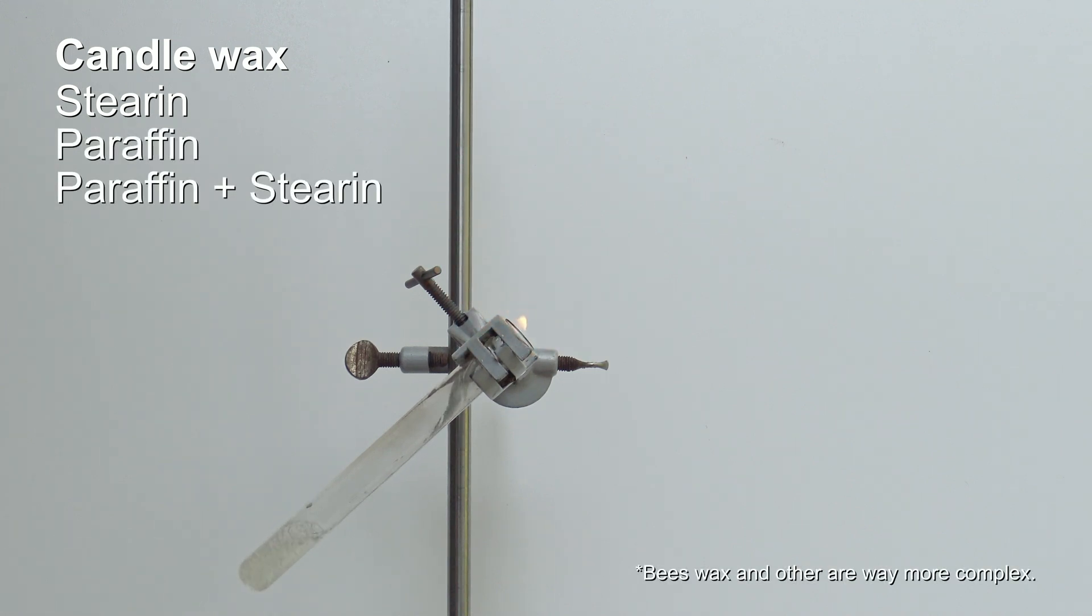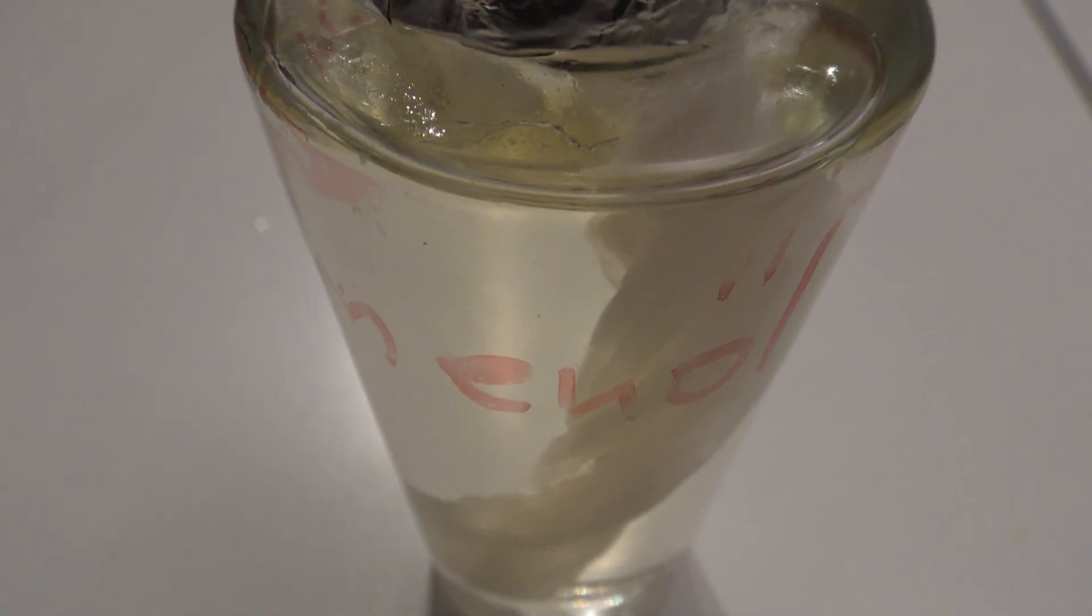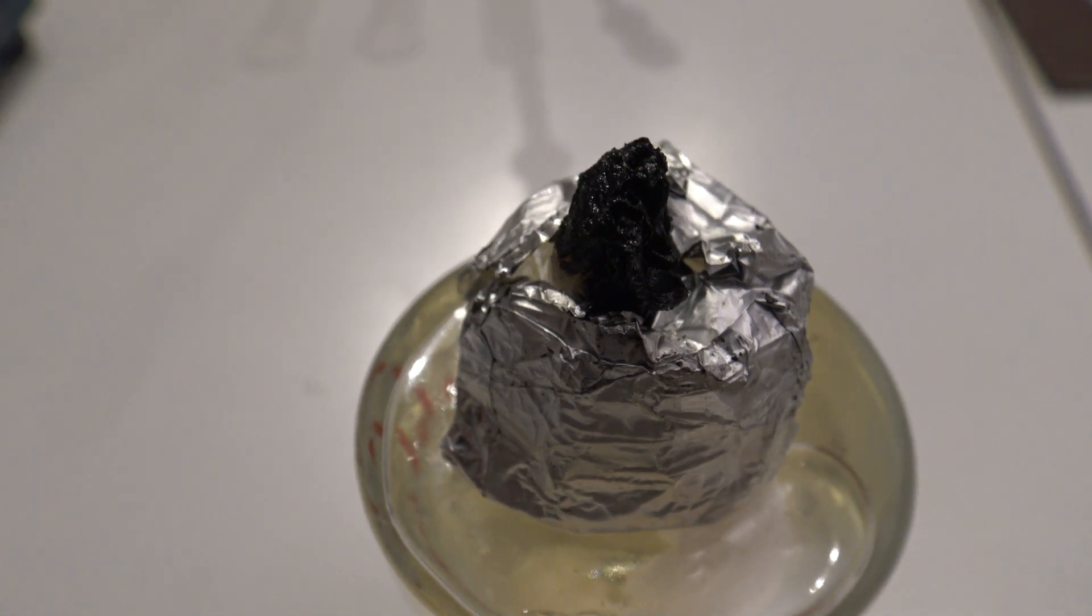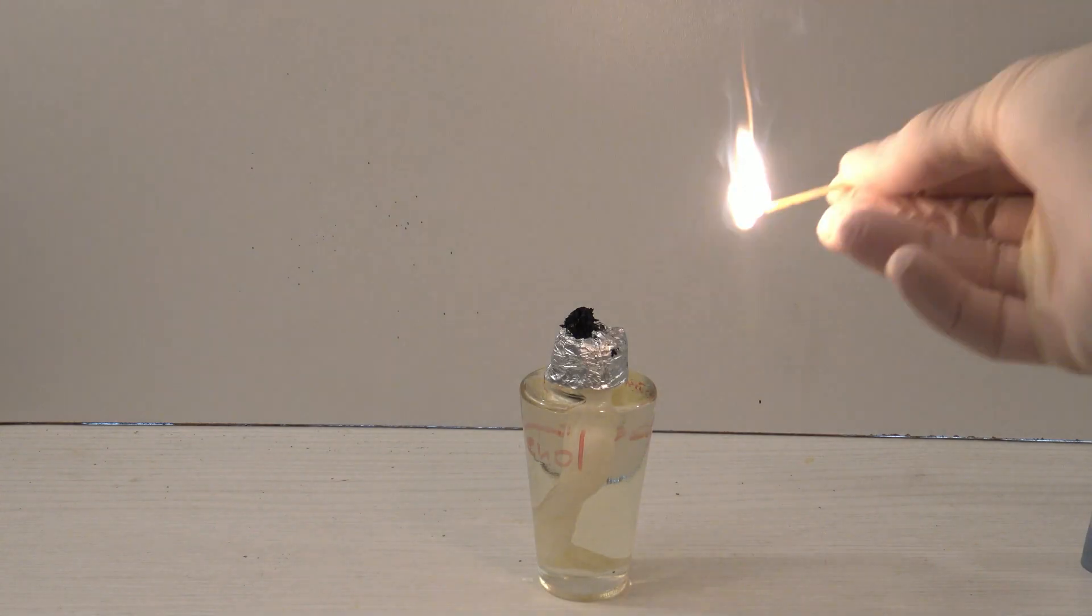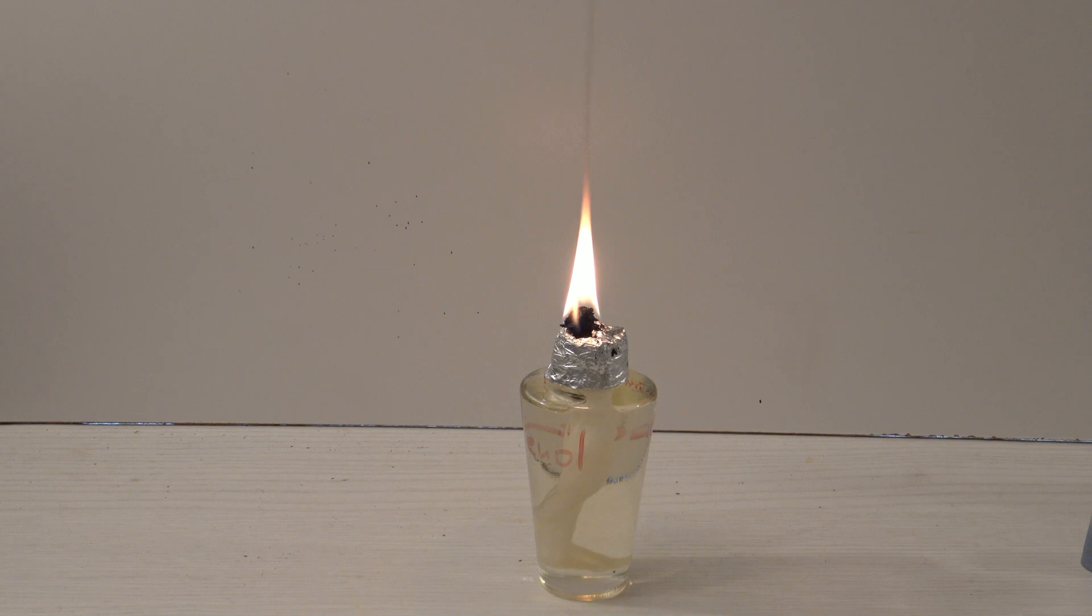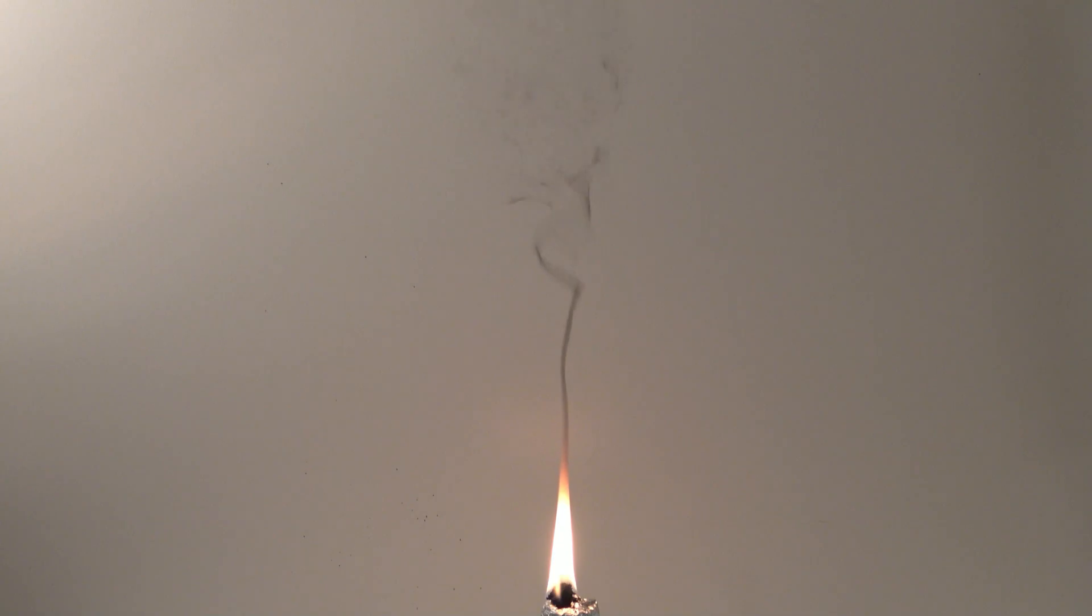Oil lamps work the same way as a candle, but the fuel is already in a liquid state. Here, a glass bottle was filled with sunflower seed oil, and a twisted piece of paper towel was used as a wick, which was held by aluminum foil.